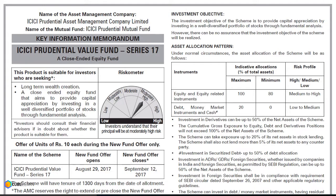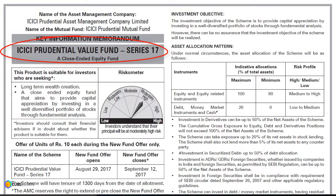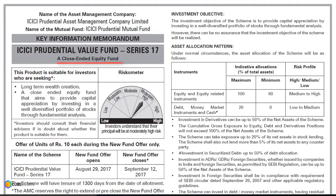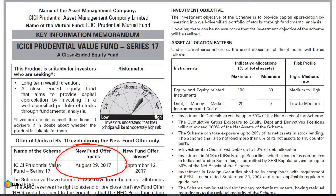This is an example of a new fund offering by ICICI Prudential Asset Management Company Limited. The name of the scheme is ICICI Prudential Value Fund Series 17. The document is called the Key Information Memorandum, or KIM. This is a close-ended equity fund. The offer of units is for Rs. 10. The fund opens on August 29, 2017 and closes on September 12, 2017.